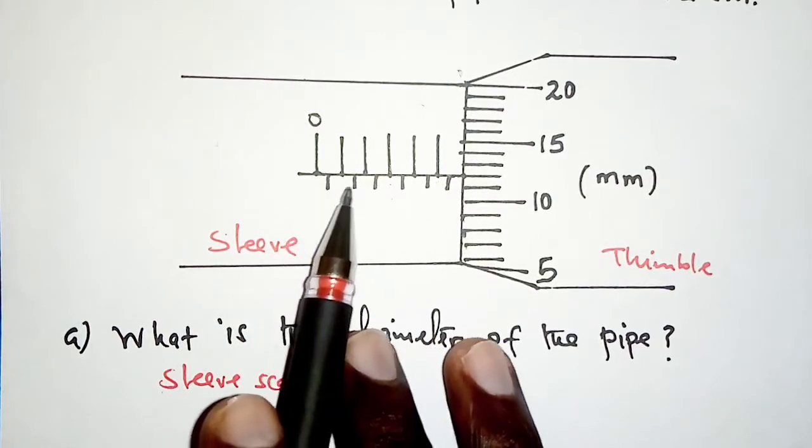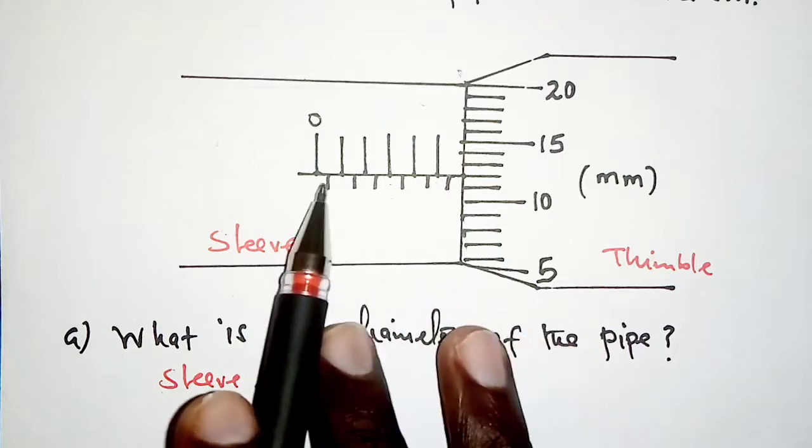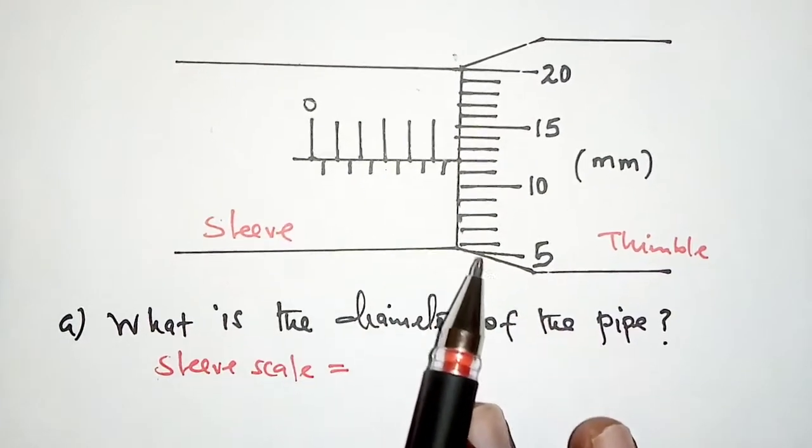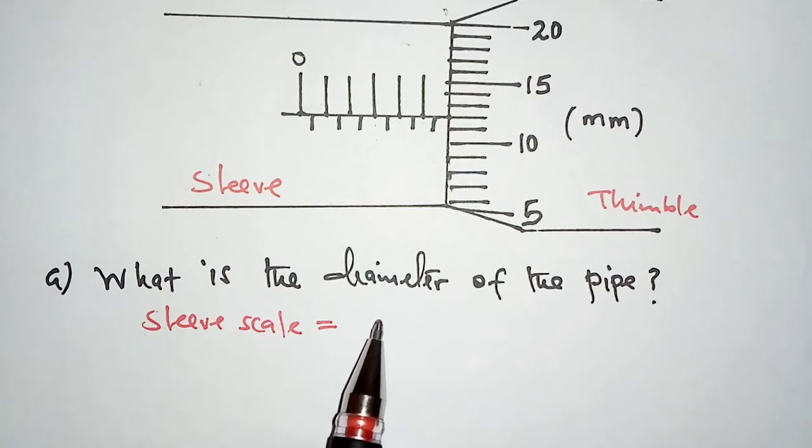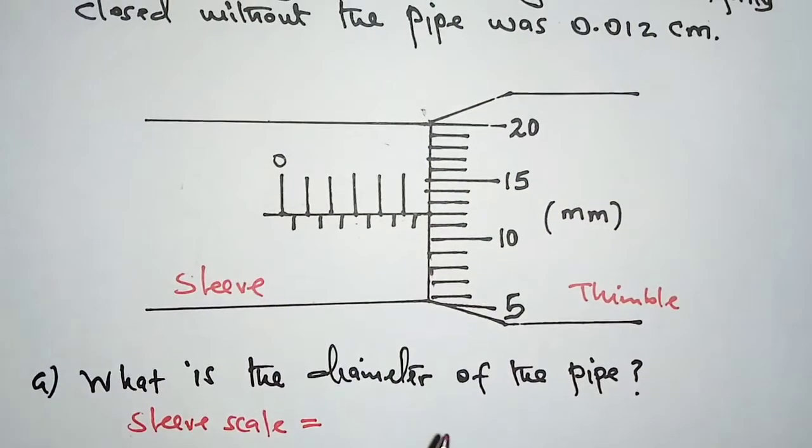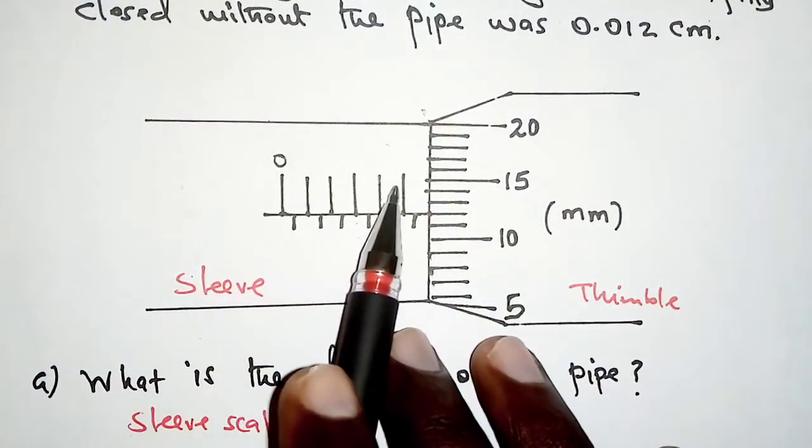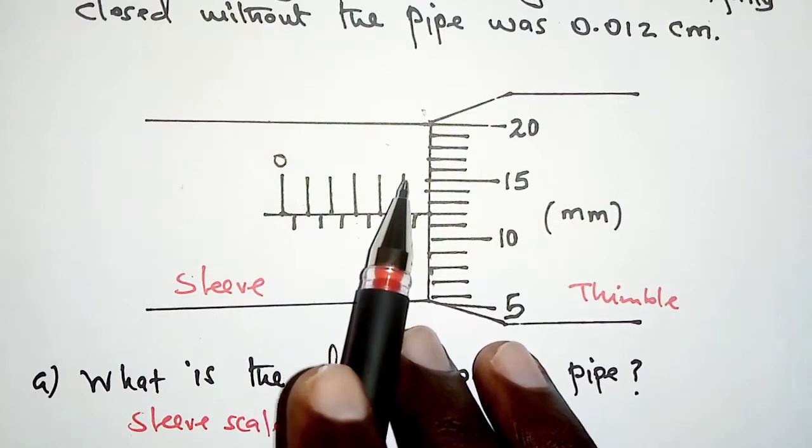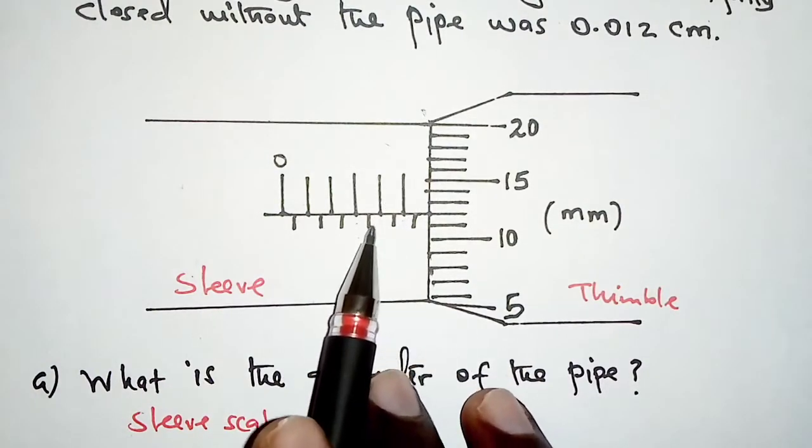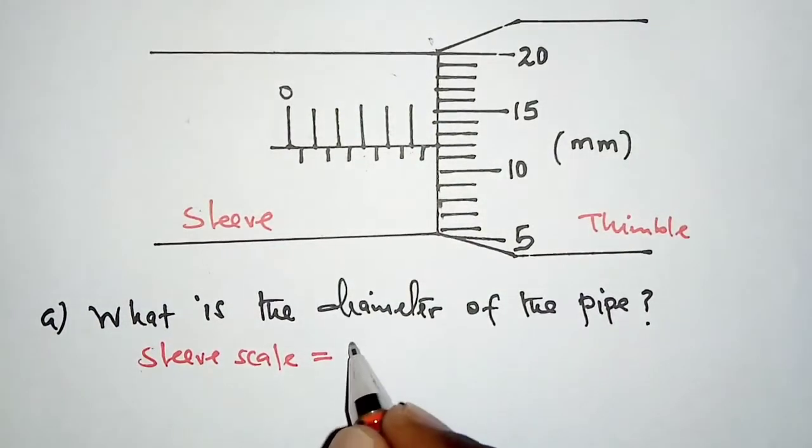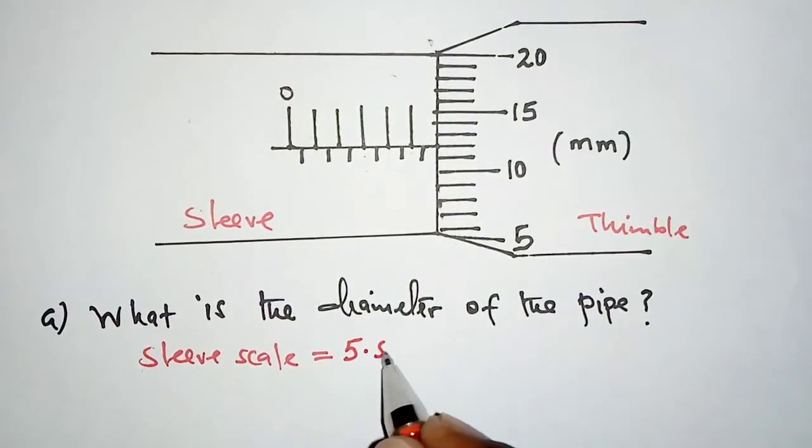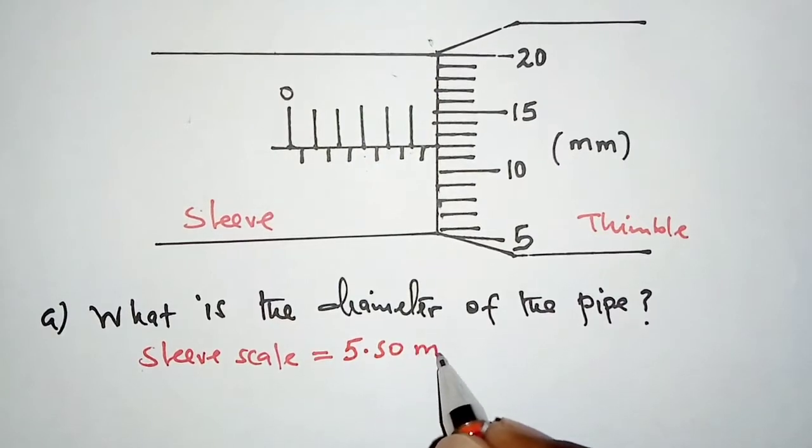If we are able to see a half millimeter mark on the sleeve scale, then any measurement we take should include 0.50. On the sleeve scale here, we have 5 and then because of the half millimeter marks, we add 0.50, so we have 5.50 millimeters.